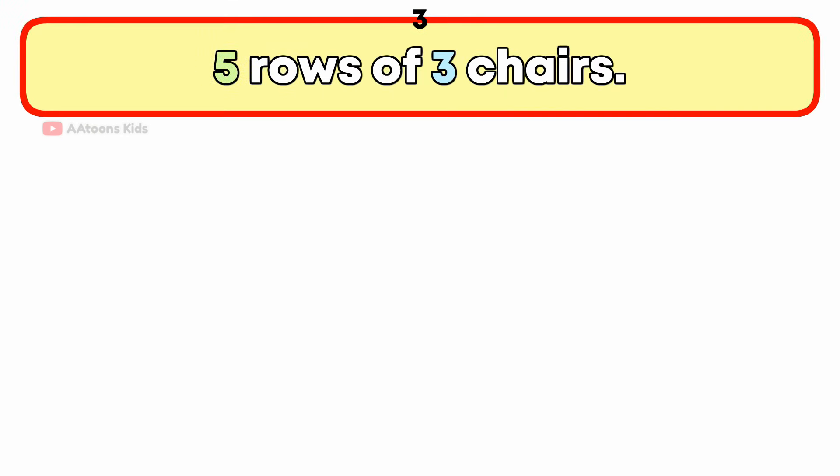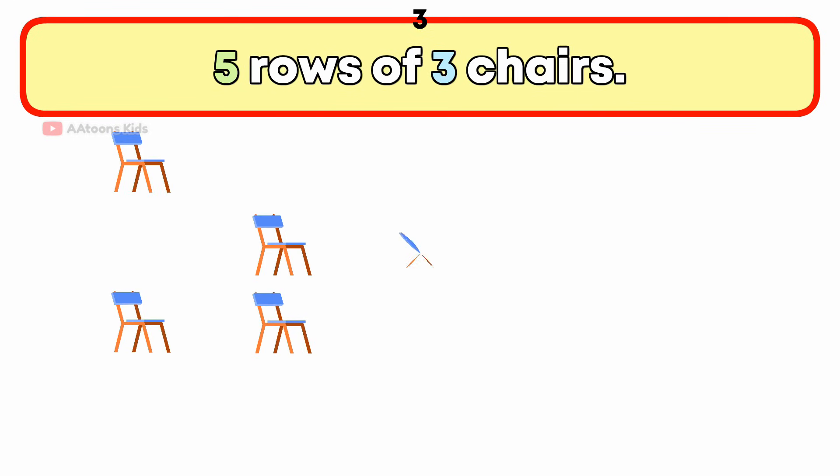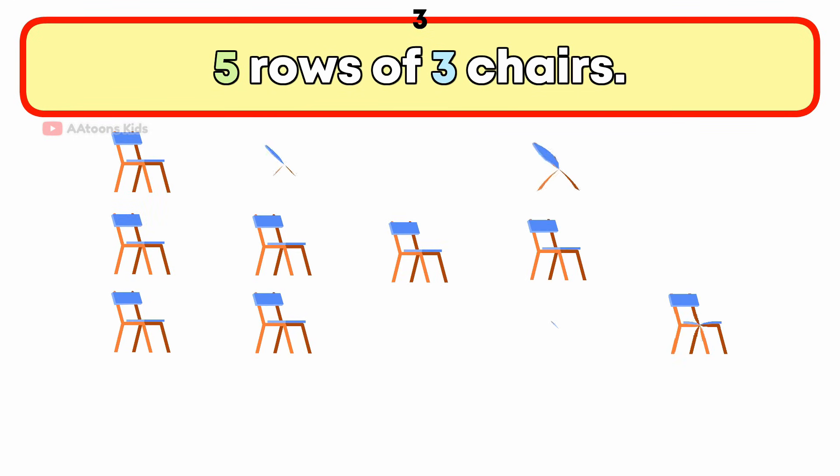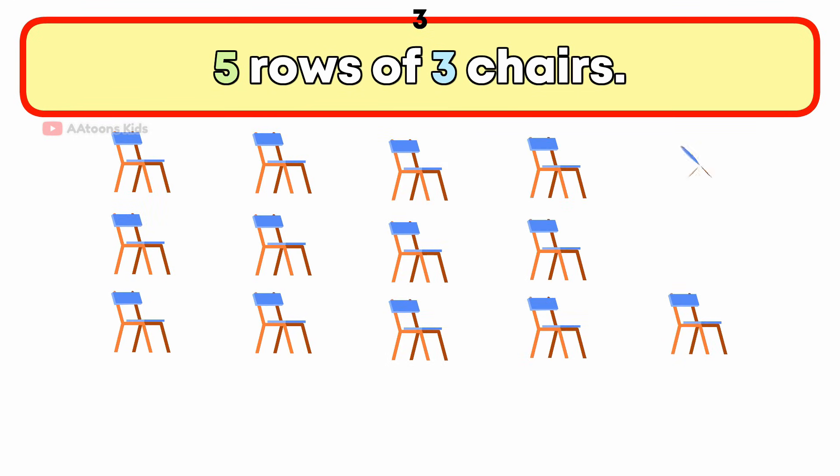5 rows of 3 chairs. How many chairs are there in total? 15.